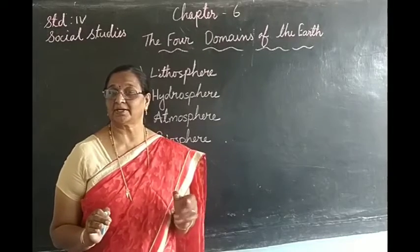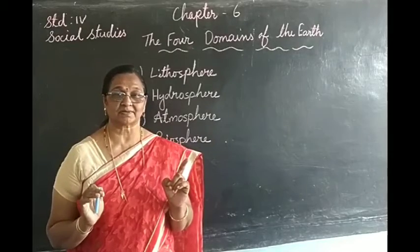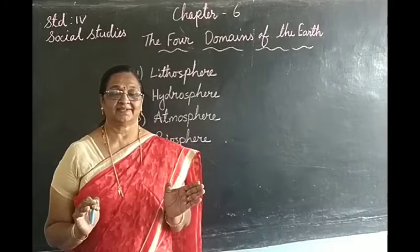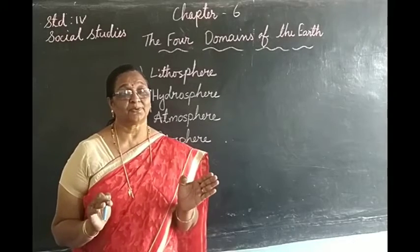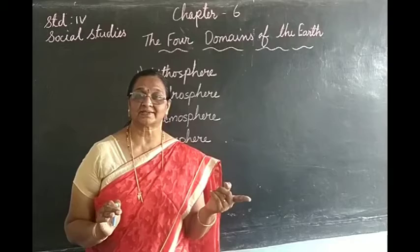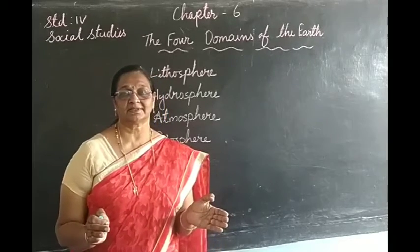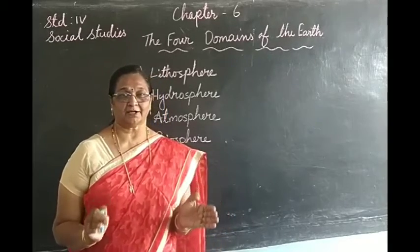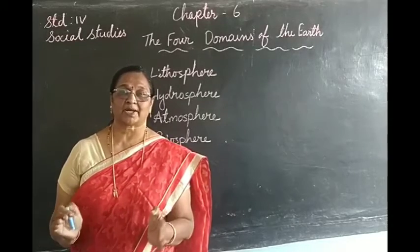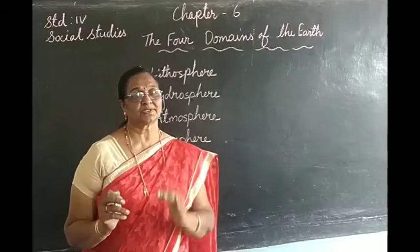Why is it called a unique planet? Because earth is the only planet which has life. You have already learnt in the previous classes about the solar system and the planets — there are 8 planets. Solar system means the sun and its 8 planets together.